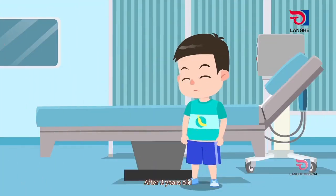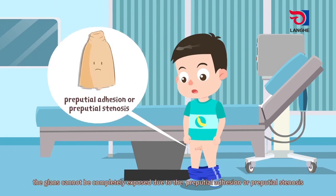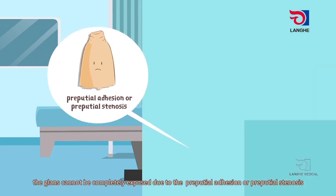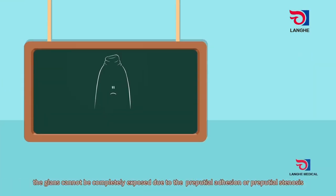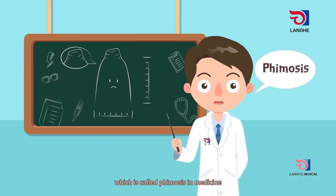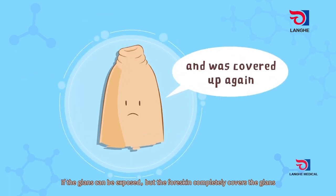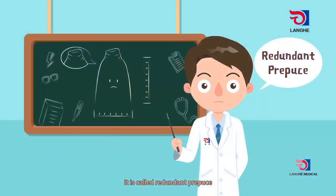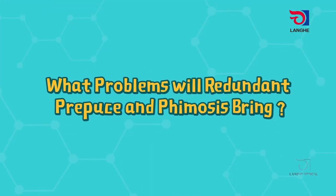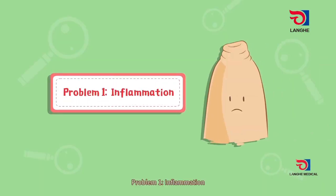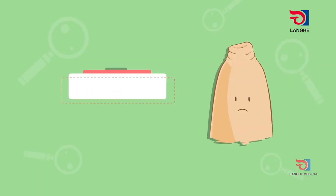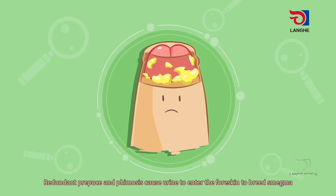After three years old, the glans cannot be completely exposed due to preputial adhesion or preputial stenosis, which is called phimosis in medicine. If the foreskin completely covers the glans and cannot be retracted to expose it, it is called redundant prepuce.